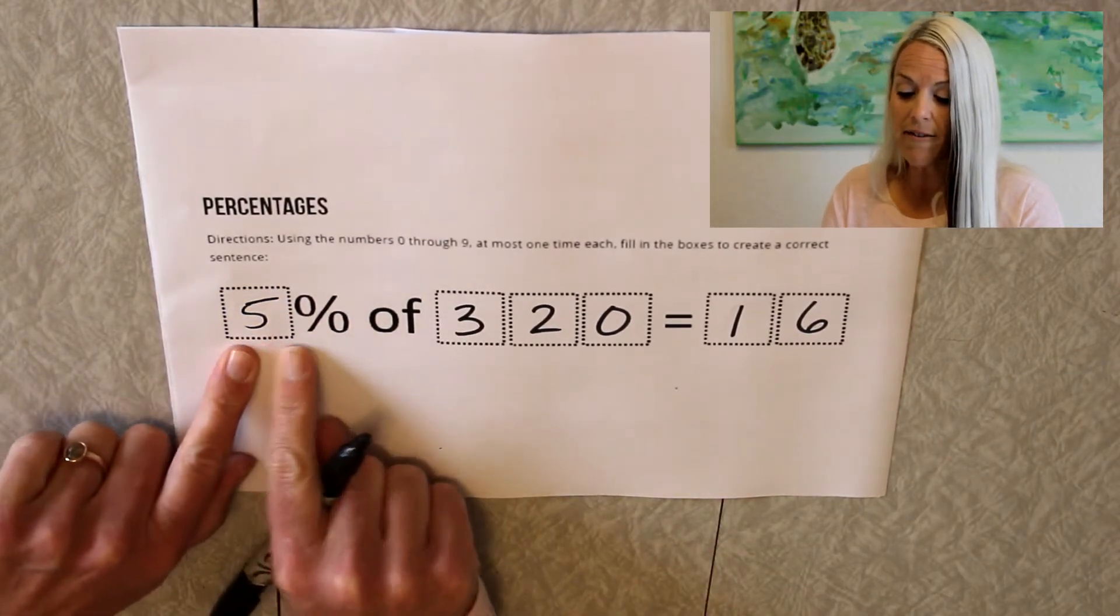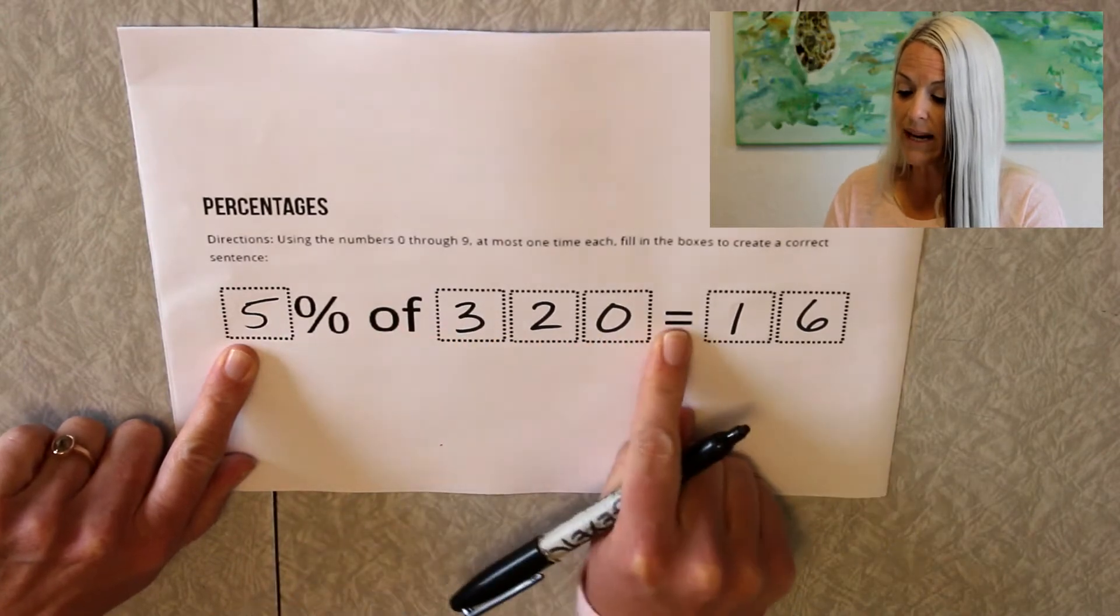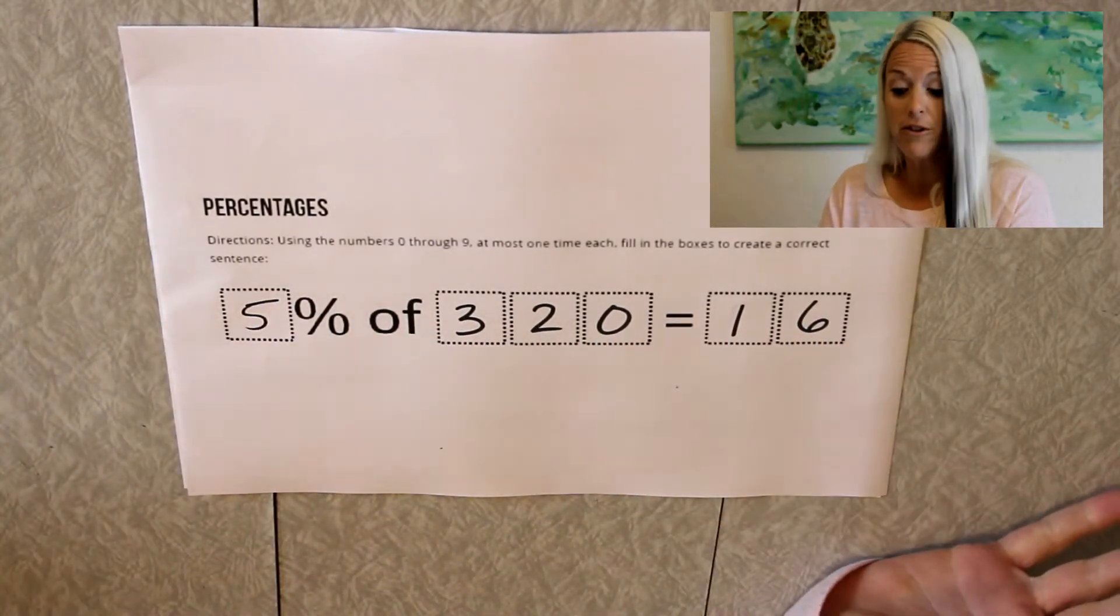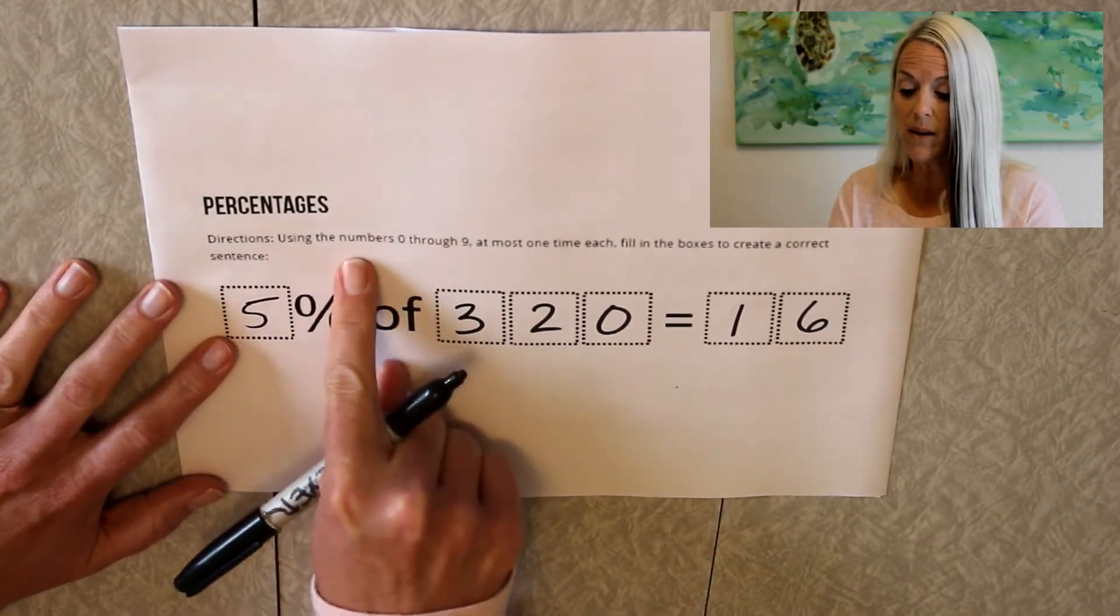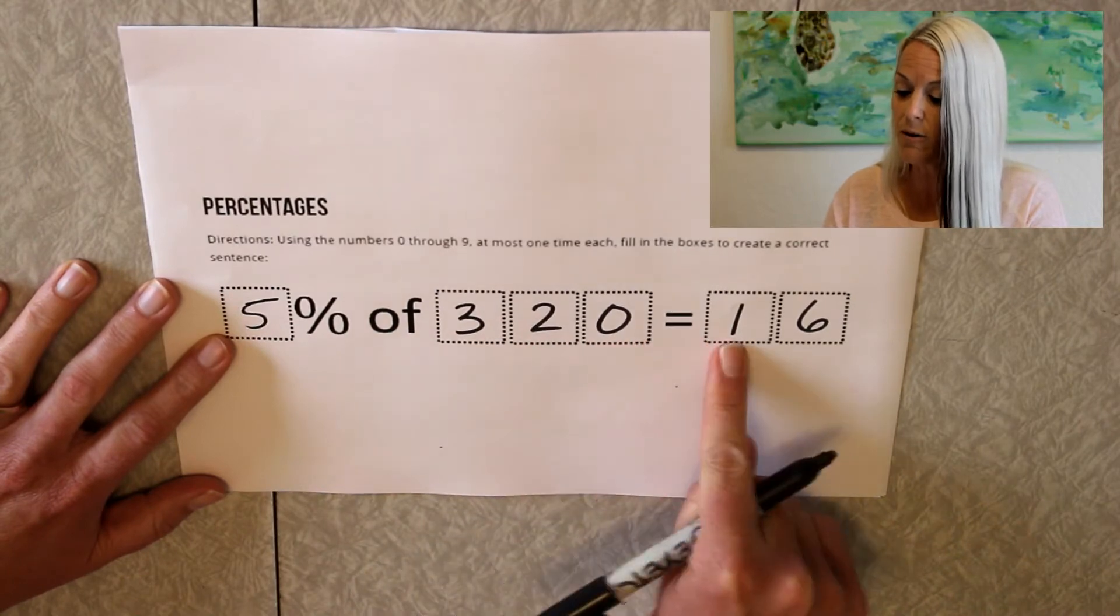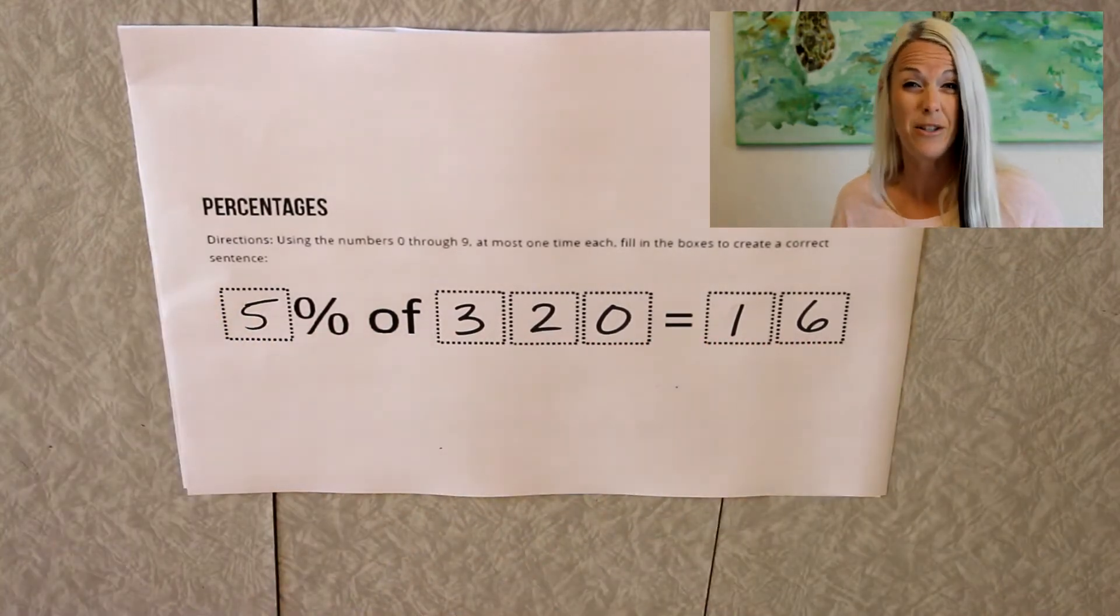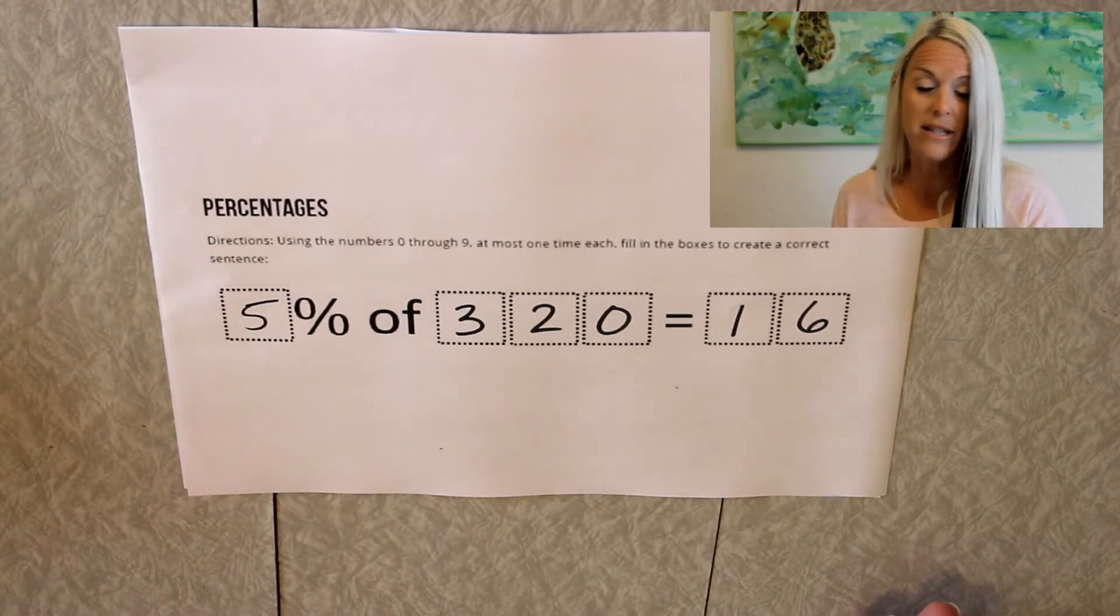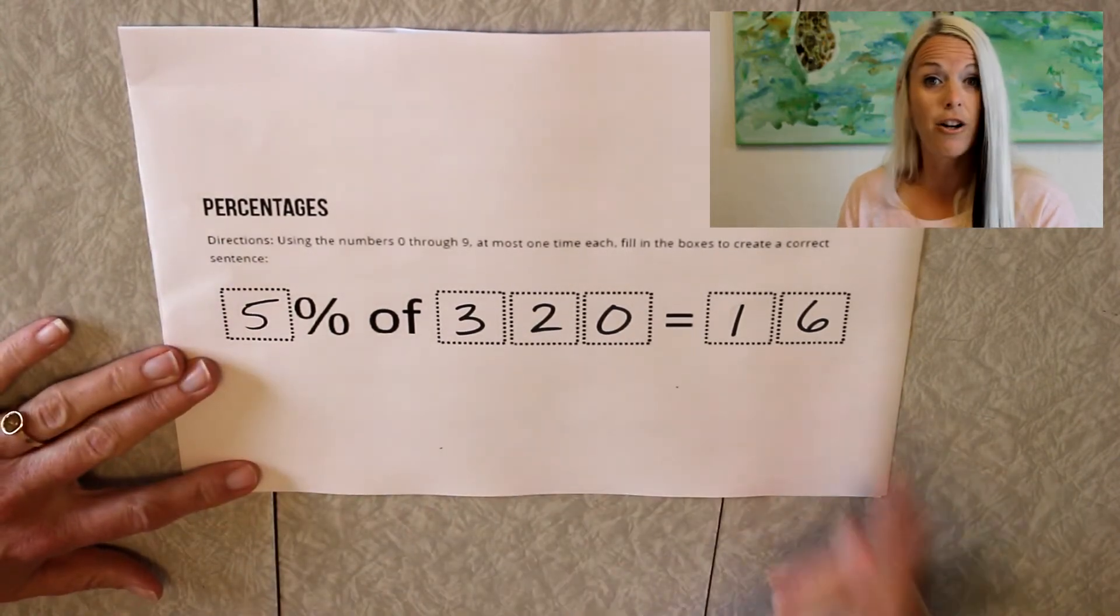So Sienna stated that 5% of 320 is 16. She met the first criteria, which was using the numbers 0 through 9 one time each. She got 5, 3, 2, 0, 1, 6. She didn't repeat any digits. So let's see if she completed the second criteria, which was making a correct sentence.